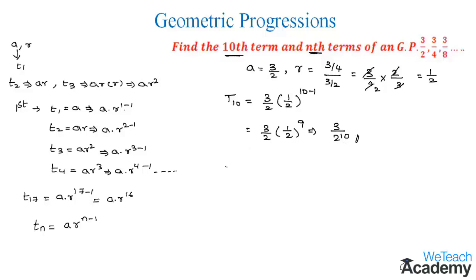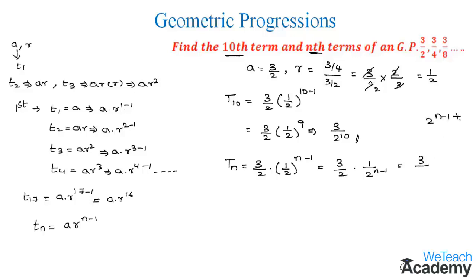Similarly let us find the nth term by substituting the values. We get 3/2 into (1/2) power n minus 1, which becomes 3 divided by 2 into 2 power n minus 1. Since the bases are equal in the denominator we add the powers, giving 2 power n minus 1 plus 1. The minus 1 and plus 1 cancel, so the general term of the given geometric progression is 3 divided by 2 power n.